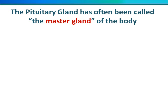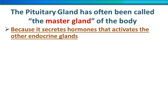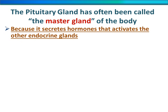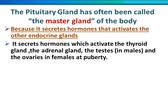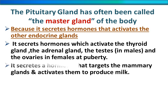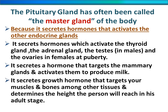The pituitary gland has often been called the master gland of the body because it secretes hormones that activate the other endocrine glands — specifically the thyroid gland, adrenal gland, testes in males, and ovaries in females. It also secretes hormones that target the mammary glands to activate them to produce milk during delivery, and hormones that target muscles, bones, and other tissues, determining the height a person will reach in their adult stage.